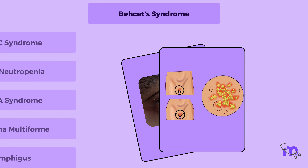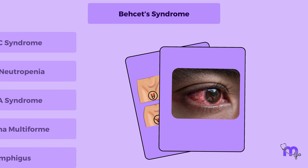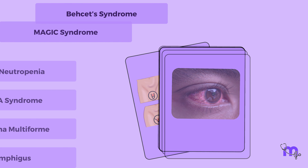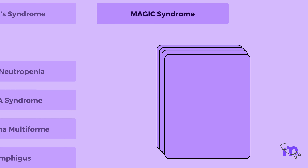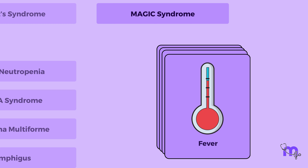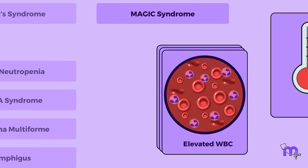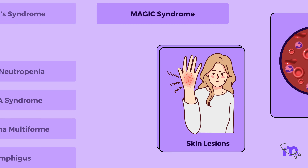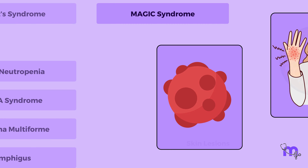Behçet's syndrome also causes recurrent ulcers, but they also appear on the genitals and cause ocular disease, unlike RAS. The next condition is Magic syndrome, where patients experience a sudden onset of fever, elevated white blood cell count, and skin lesions. Additionally, half of these patients have an associated malignancy.